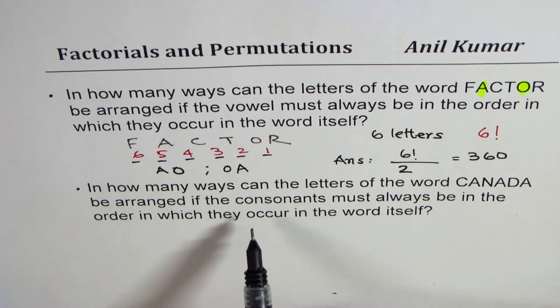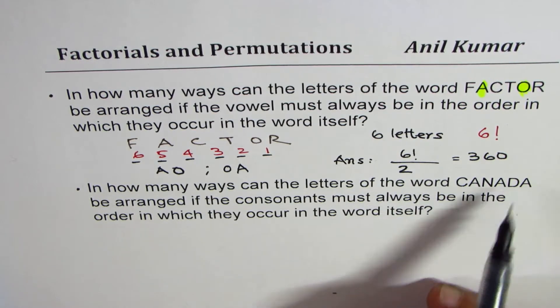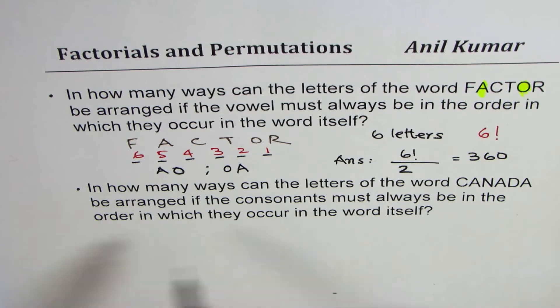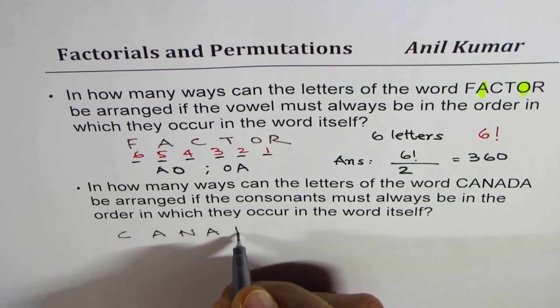Now, let's look into the second example. Here, in how many ways can the letters of the word CANADA be arranged if the consonants must always be in the same order? So let's rewrite the word Canada. We have C, A, N, A, D, A.